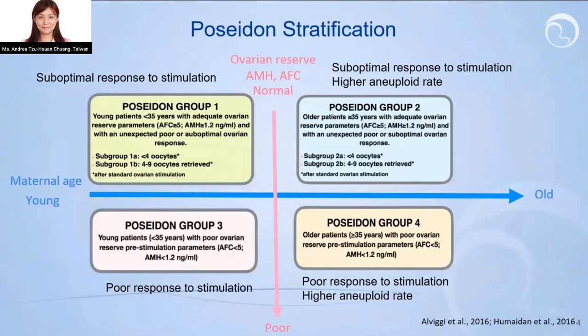Before we talk about PGTA, I want to begin with the Poseidon stratification. This system divides IVF women according to their ovarian reserve and maternal age. As we already know, with increased maternal age, the ovarian reserve decreases and the aneuploidy rate in the female eggs increases. That's why older women have such difficulty achieving pregnancy.